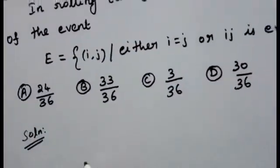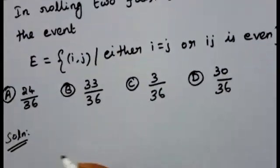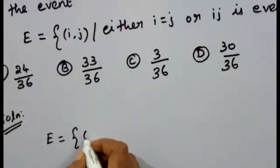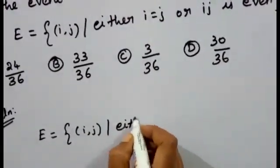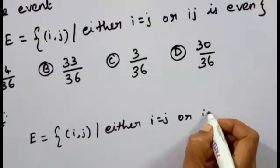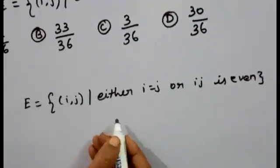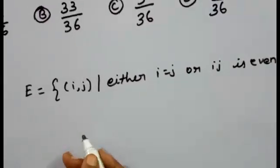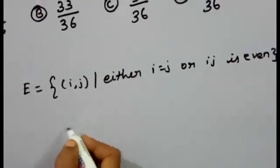Now we are going to discuss the solution. We are going to discuss the two dice and the event: the set of (i,j) such that either i equals j or ij is even. We will see how many outcomes there are. If we have two dice, we will look at the outcome of the event.